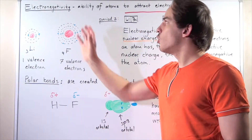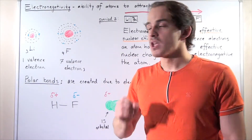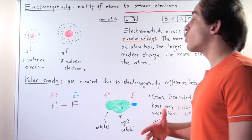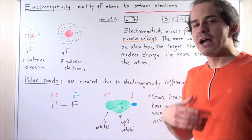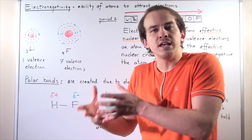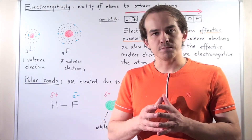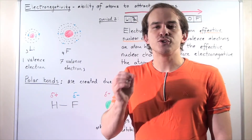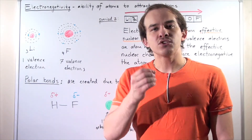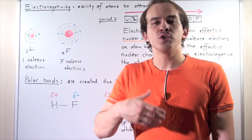We've defined what electronegativity is, but where does it come from? It turns out that effective nuclear charge determines electronegativity. Effective nuclear charge is simply the charge that the valence electrons in the outermost shell feel due to the protons found in the nucleus. Electrons and protons attract one another. Normally, the effective nuclear charge is smaller than the actual nuclear charge because some electrons in the innermost shell shield the charge, creating a shielding effect.